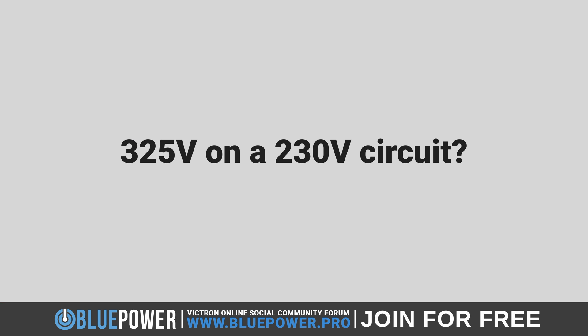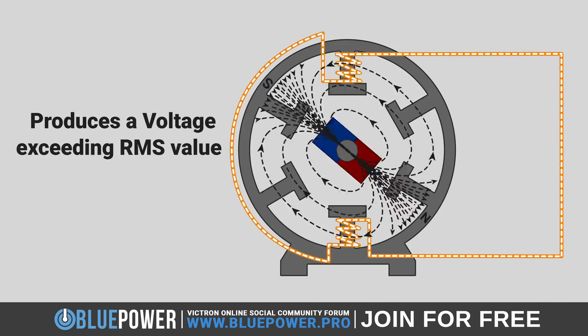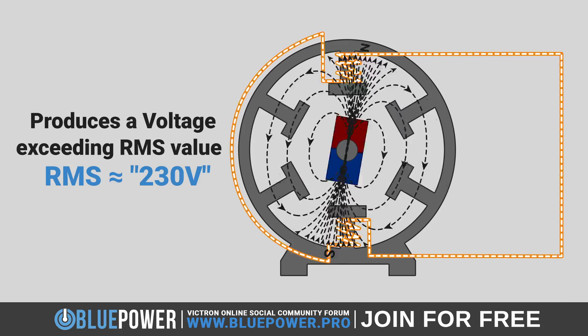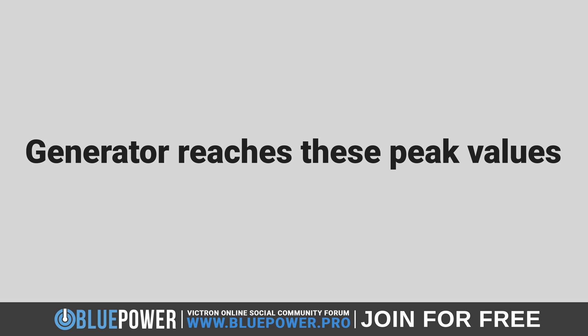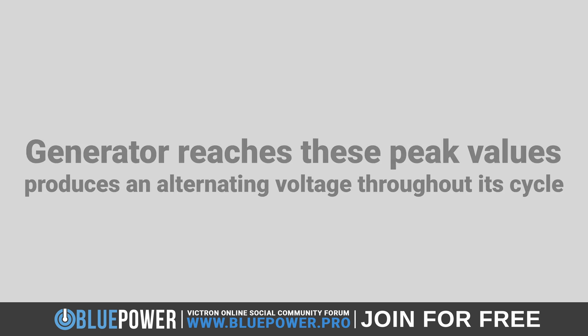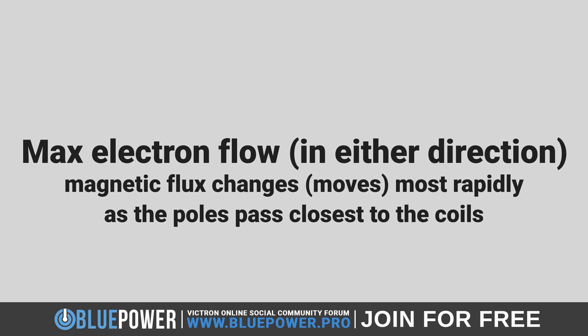But why is it going all the way to positive and negative 325 volts when this is a 230 volt circuit? Well, this is because during the magnet's rotation, the generator produces a voltage that exceeds the RMS value that we commonly refer to as 230 volts. This peak voltage is about 1.414 times the RMS value, which for a 230 volt supply calculates to approximately 325 volts. In other words, the generator reaches these peak values as it produces an alternating voltage throughout its cycle, with these peaks corresponding to the maximum electron flow when the magnetic flux changes most rapidly as the poles pass closest to the coils.